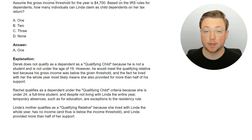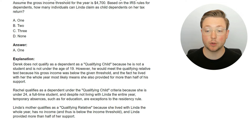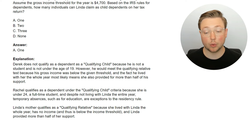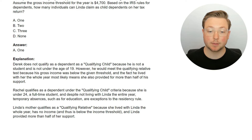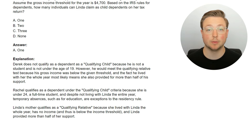Only one person can be counted as a child dependent. Derek does not qualify as a qualifying child because he is not a student and is not under the age of 19 — remember, it's specifically under the age of 19. However, he would meet the qualifying relative test because his gross income was below the given threshold and he lived with her the whole year. Rachel qualifies as a dependent under the qualifying child criteria because she is under 24, a full-time student, and despite not living with Linda the entire year, temporary absences such as for education are exceptions to the residency rules. Linda's mother qualifies as a qualifying relative because she lived with Linda the whole year, has no income — thus below the income threshold — and Linda provided more than half of her support.